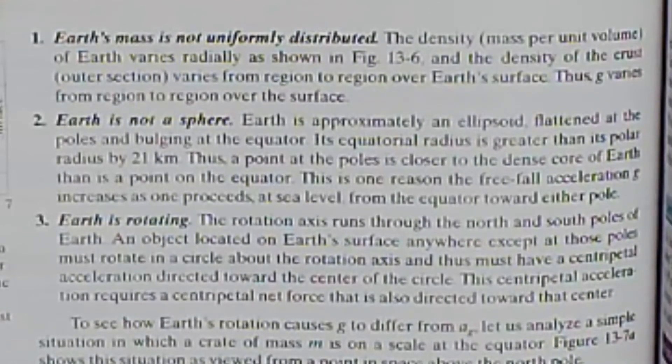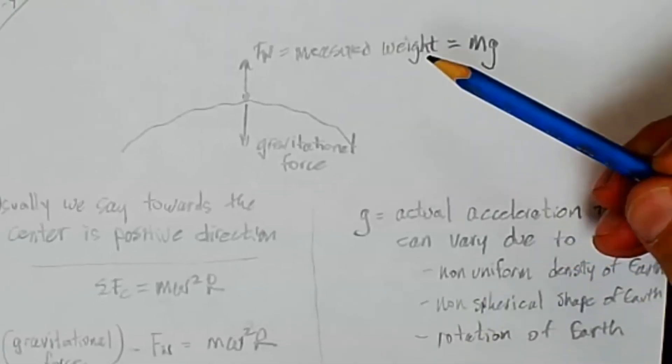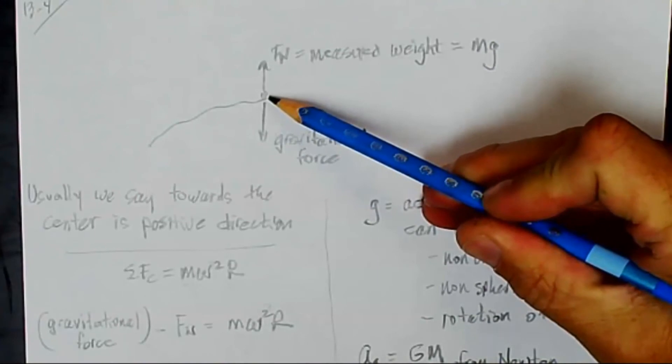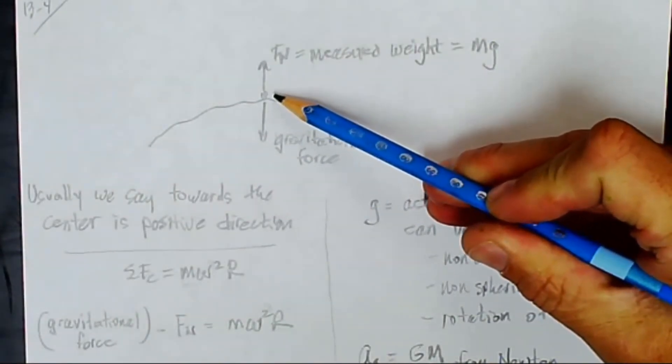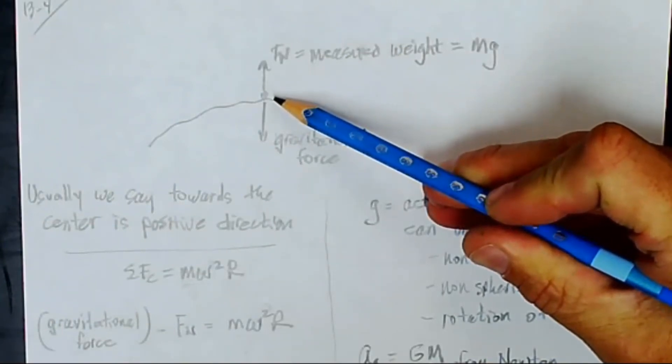To see how Earth's rotation causes the measured value of g to differ from the calculated value of a_g, let's analyze a simple situation in which a crate of mass m is on a scale at the equator. So let's start with a force diagram. Here's our crate on the surface of the Earth, and we know that there must be a net centripetal force acting on it because it's moving in a circle as the Earth rotates.